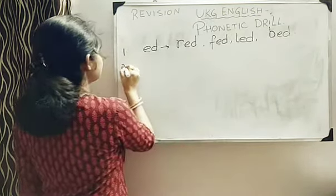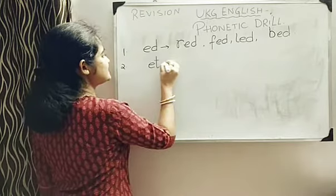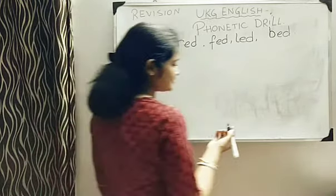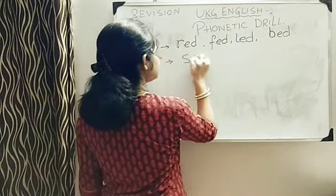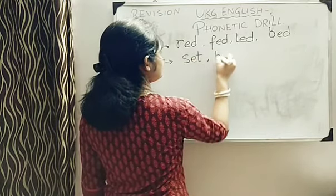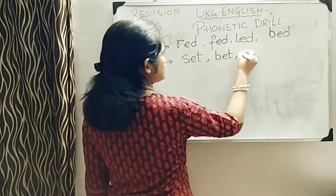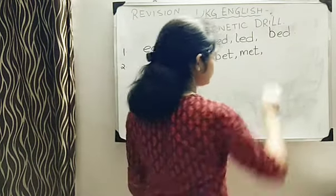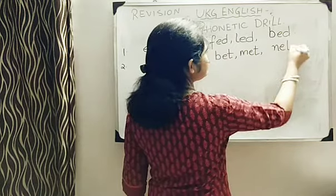Then we have number 2, we will do E-T. Easy, easy one I am giving you. It's very easy. E-T, what we can write with E-T? S-E-T, set. B-E-T, bet. M-E-T, met. Then we can write N-E-T, net.